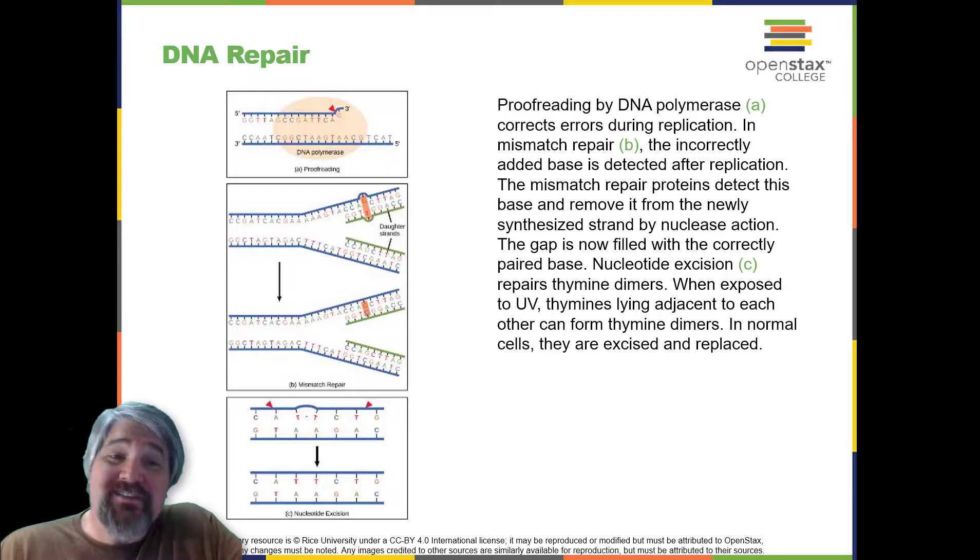In yet another type of repair, nucleotide excision repair, the DNA double strand is unwound and separated. The incorrect bases are removed along with a few bases on the 5' and 3' end, and these are replaced by copying the template with the help of DNA polymerase. Nucleotide excision repair is particularly important in correcting thymine dimers, which are primarily caused by ultraviolet light. In a thymine dimer, two thymine nucleotides adjacent to each other on one strand are covalently bonded to each other rather than their complementary bases. If the dimer is not removed and repaired, it will lead to a mutation. Individuals with flaws in their nucleotide excision repair genes show extreme sensitivity to sunlight and develop skin cancer early in life.